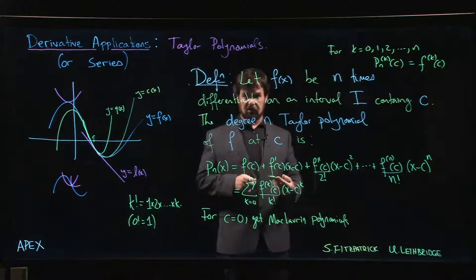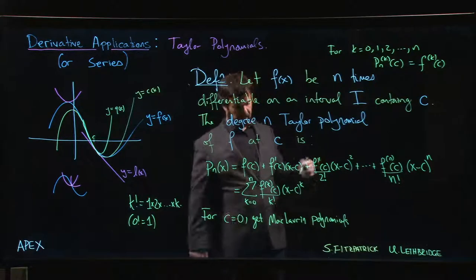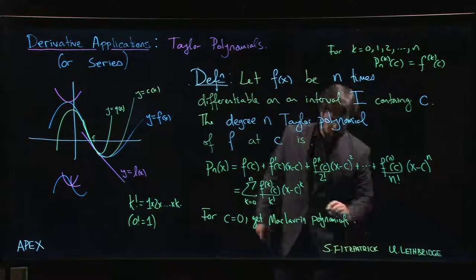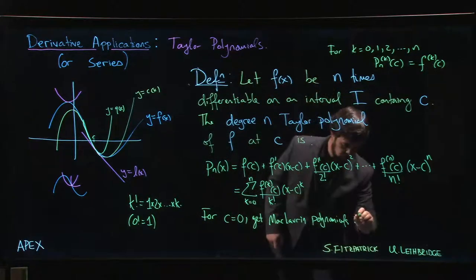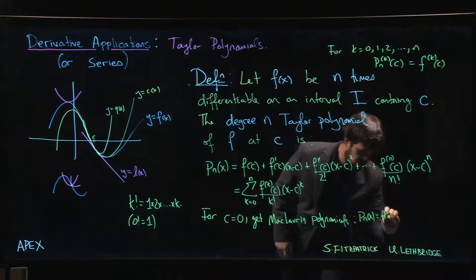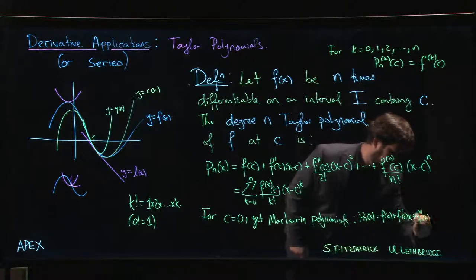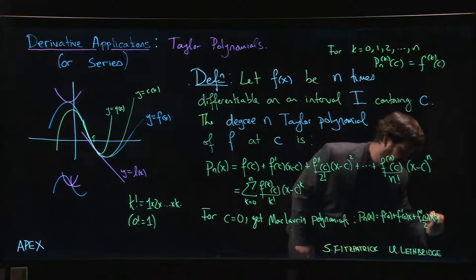Frequently in a lot of problems you'll be working with Maclaurin polynomials just because they're simpler. Instead of working in powers of say (x-2) or (x-3) or something like that, you just work in powers of x. Maclaurin polynomials are going to look like f(0), f'(0) times x, f''(0) over 2 times x squared, and so on.